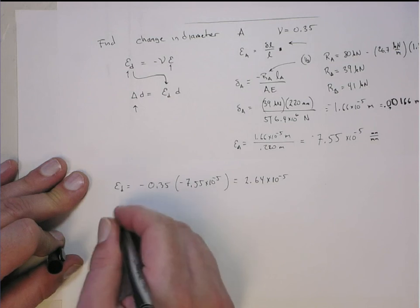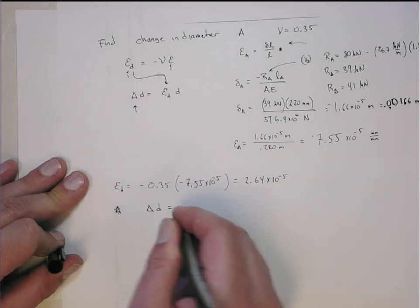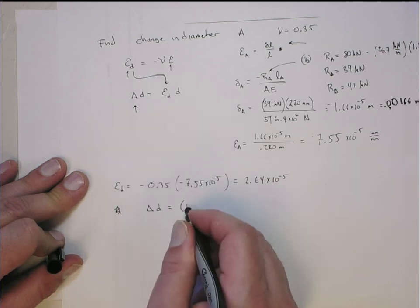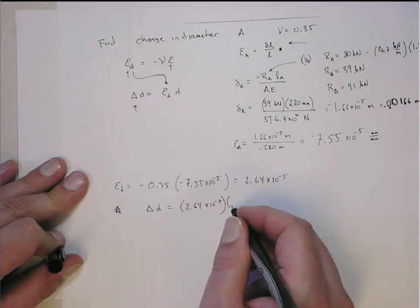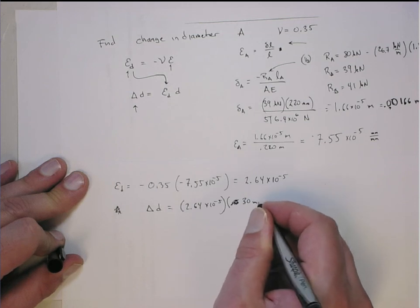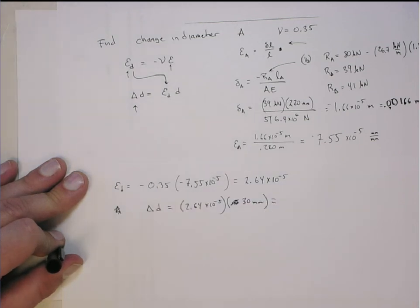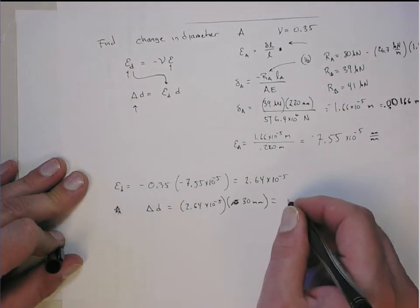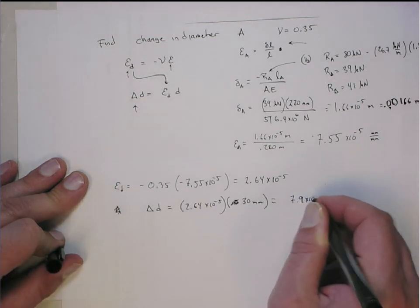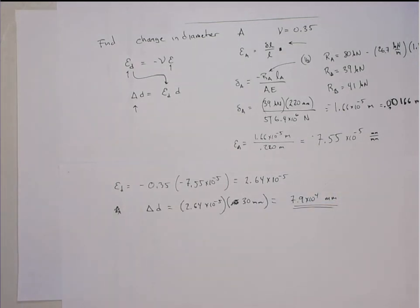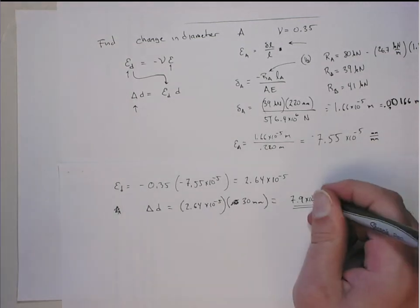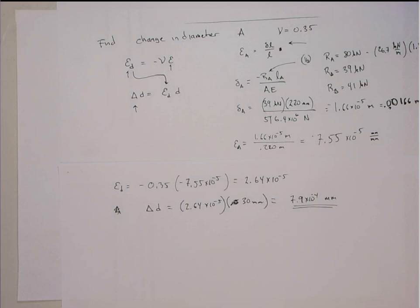Then using this relationship, I can get the change in diameter is the diametric strain times the original diameter, which they tell me is about 30 millimeters. And that gives me an increase of 7.9 times 10 to the minus 4th millimeters. So the diameter of support A increases by 7.9 times 10 to the minus 4th millimeters.